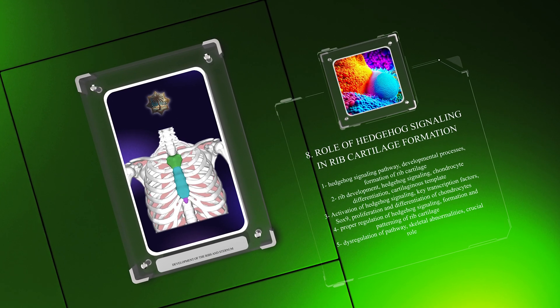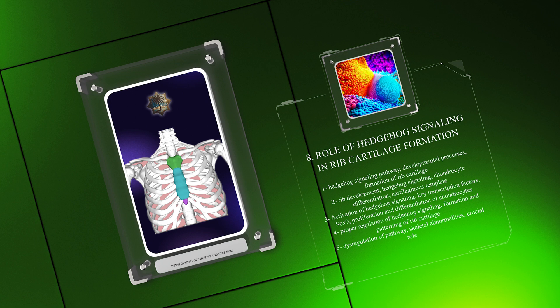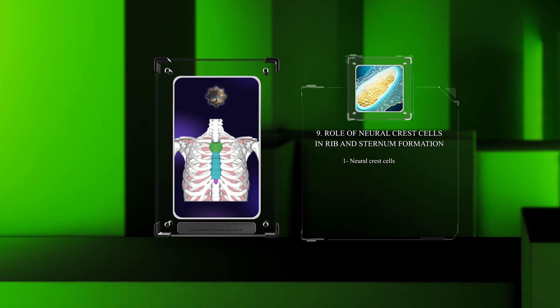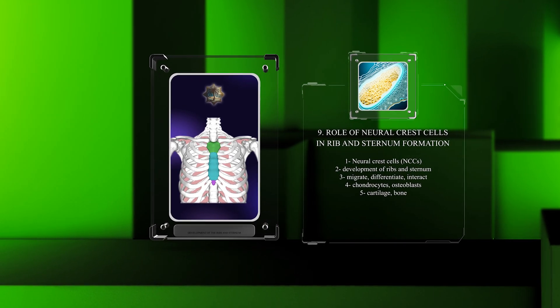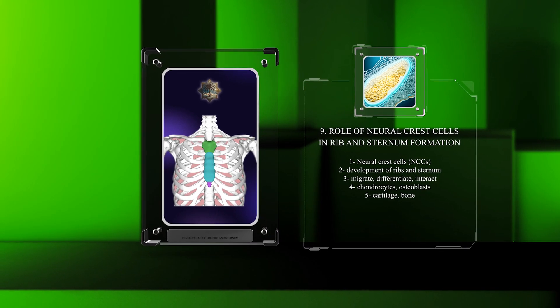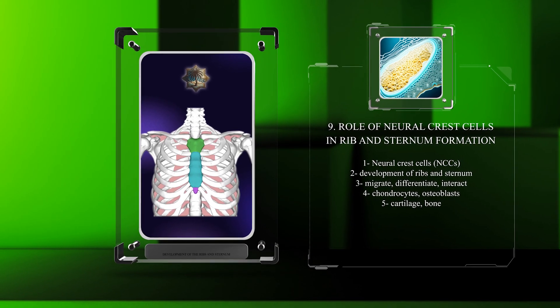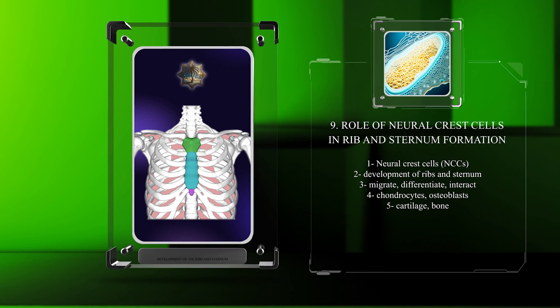Neural crest cells (NCCs) are migratory cells that play a crucial role in the development of ribs and sternum. They migrate to these structures, differentiate into chondrocytes and osteoblasts, and interact with other cell types to form cartilage and bone.